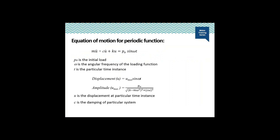The equation of motion for a periodic function is shown here, where P0 is the initial load, omega is the angular frequency of the loading function, and t is the particular time instance. The displacement with such a force function can be obtained as amplitude times sine of omega*t, where the amplitude is given by the equation shown. The variable u is the displacement at any particular time instance and c is the damping of the system.